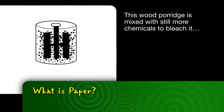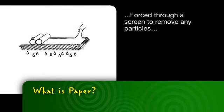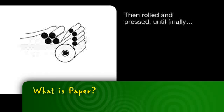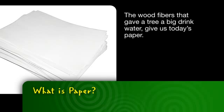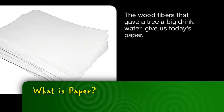This wood porridge is mixed with still more chemicals to bleach it, forced through a screen to remove any particles, then rolled and pressed until finally, the wood fibers that gave a tree a big drink of water give us today's paper.